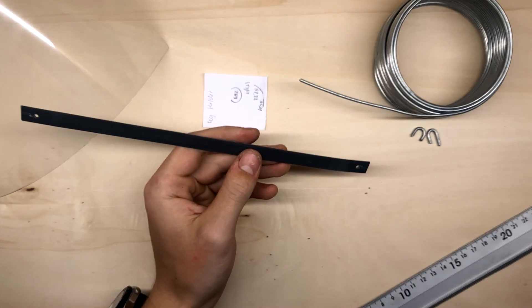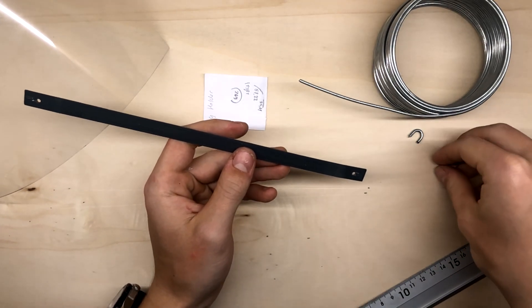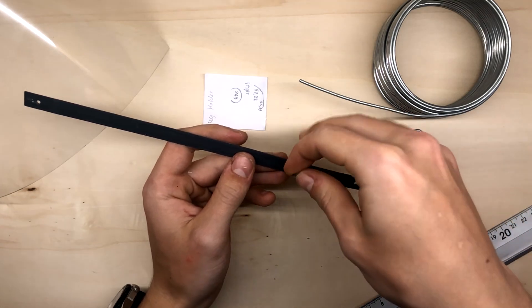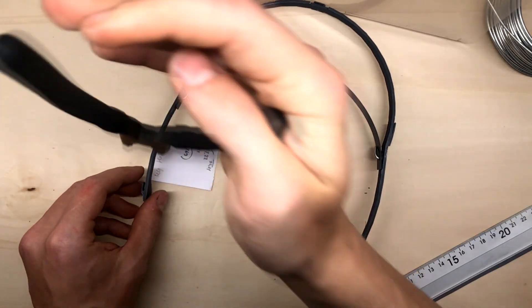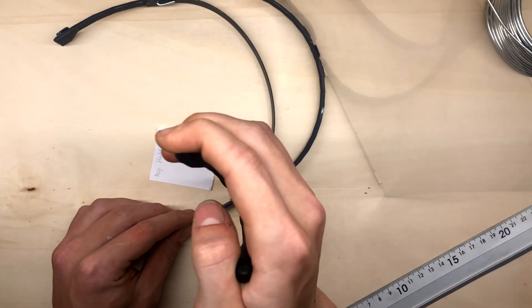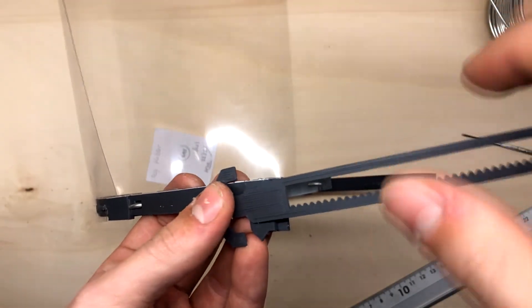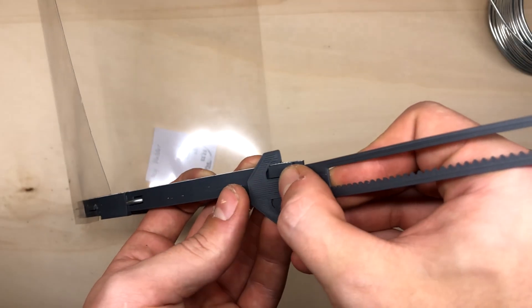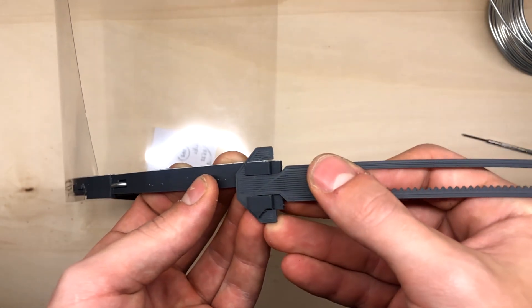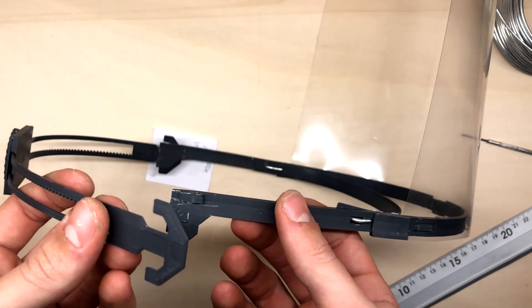This strip will be touching your forehead and it is attached with a wire or a screw. To put it on your head, you will need the item number one. Simply slide them to these hooks and it's ready.